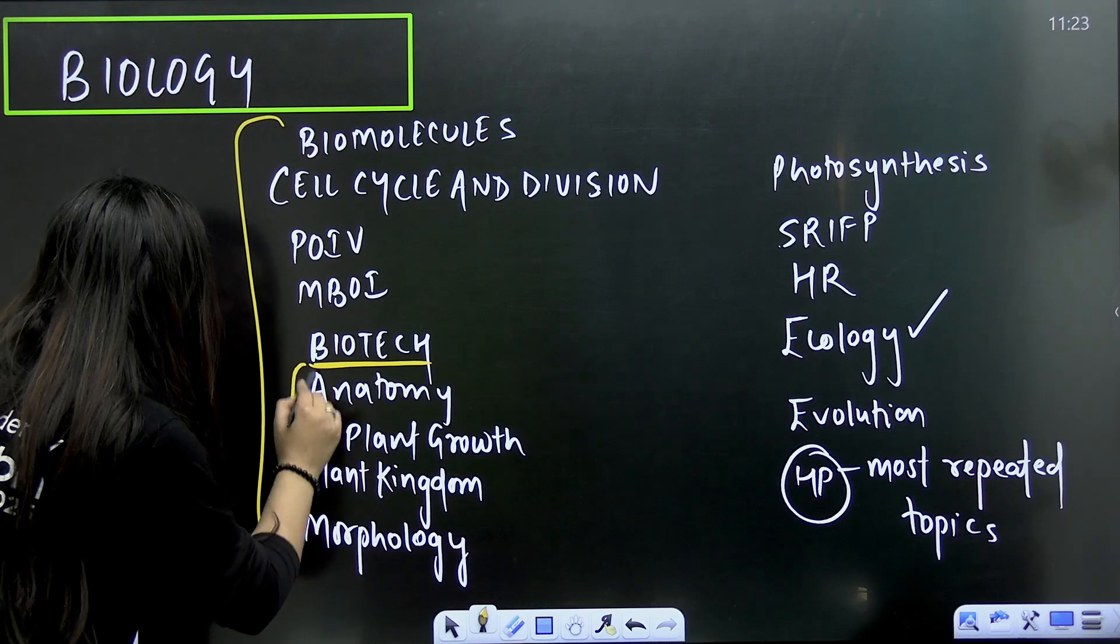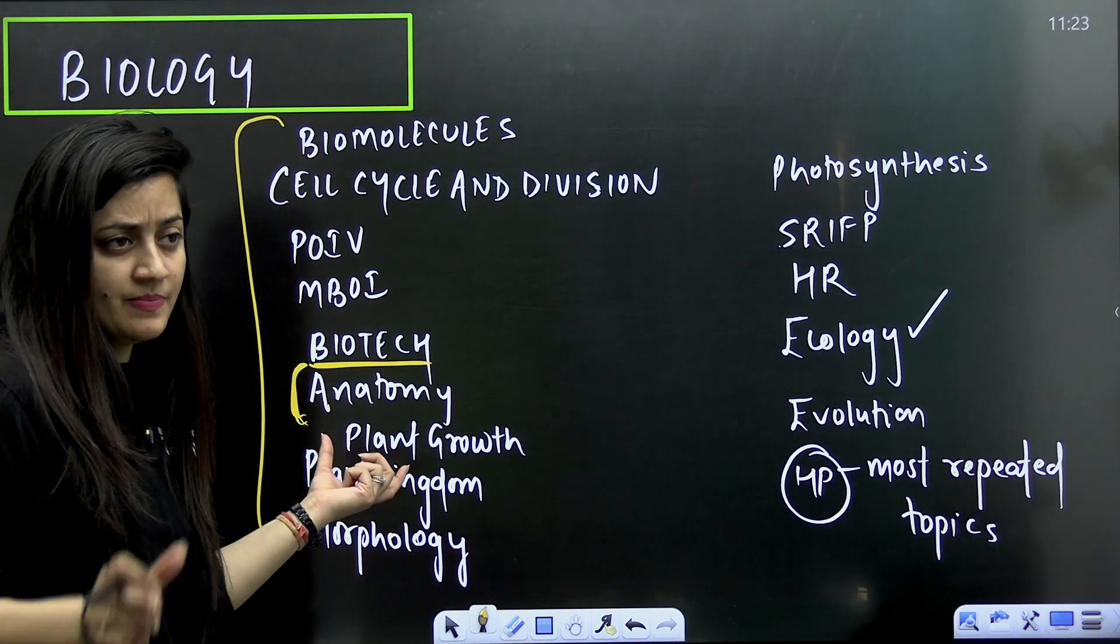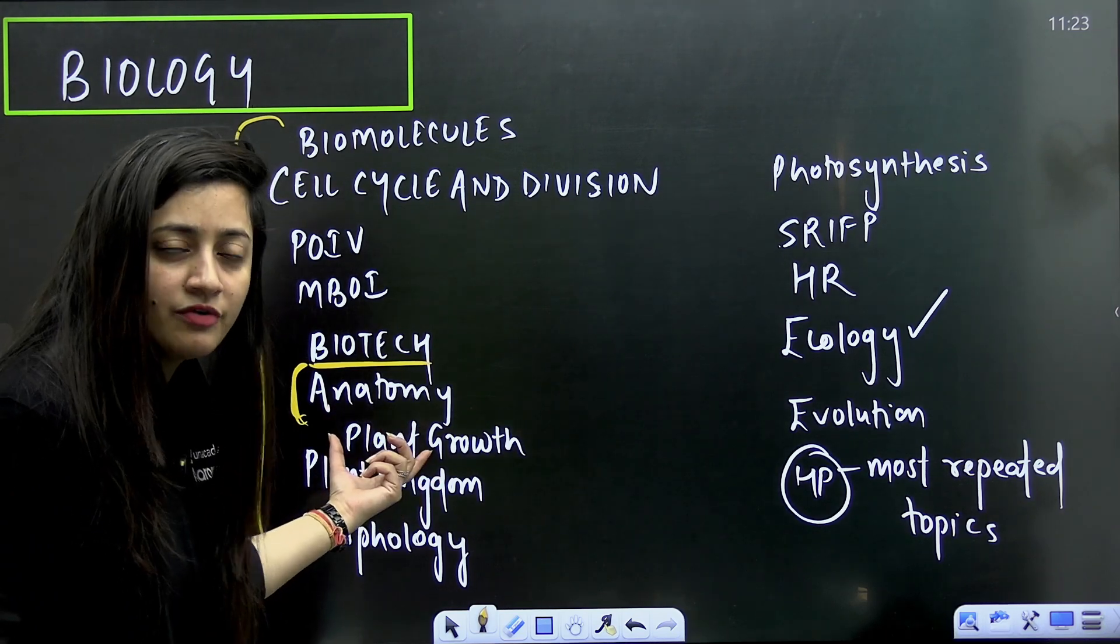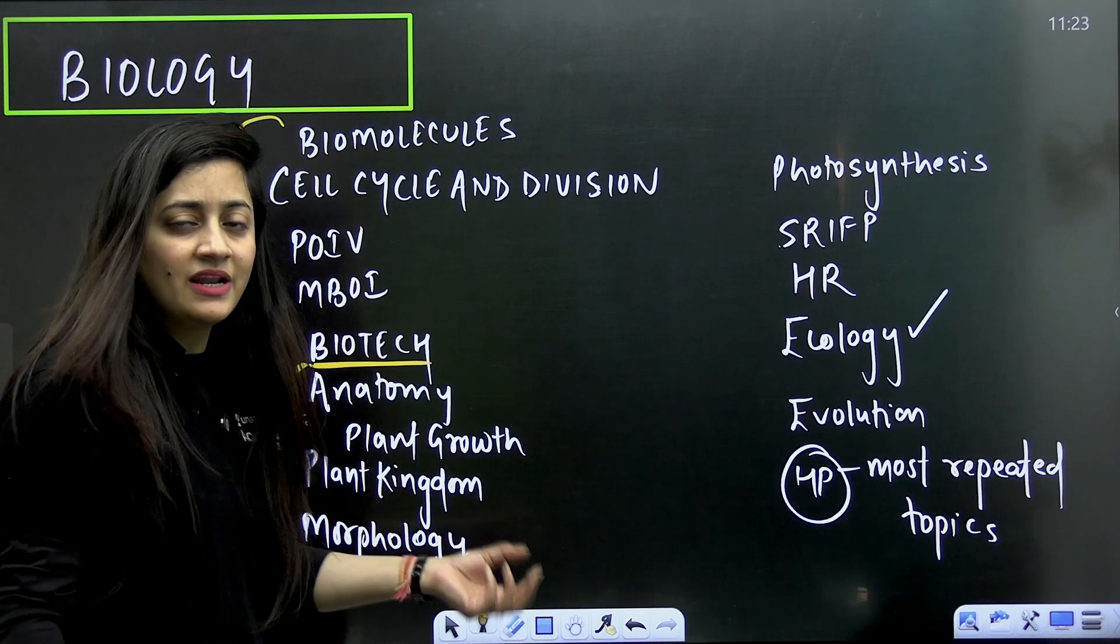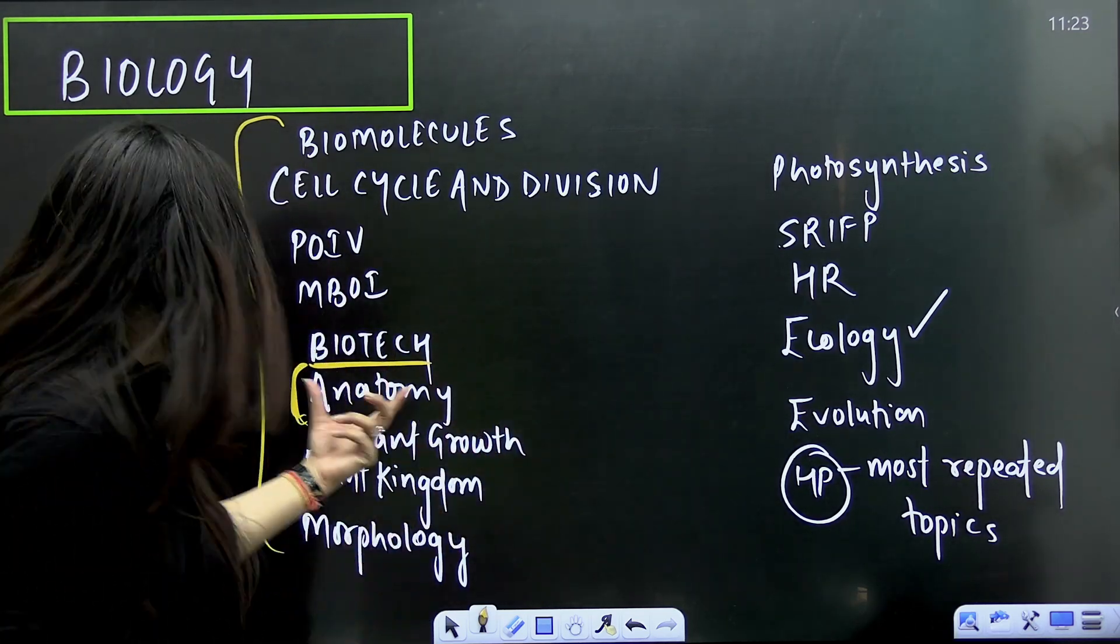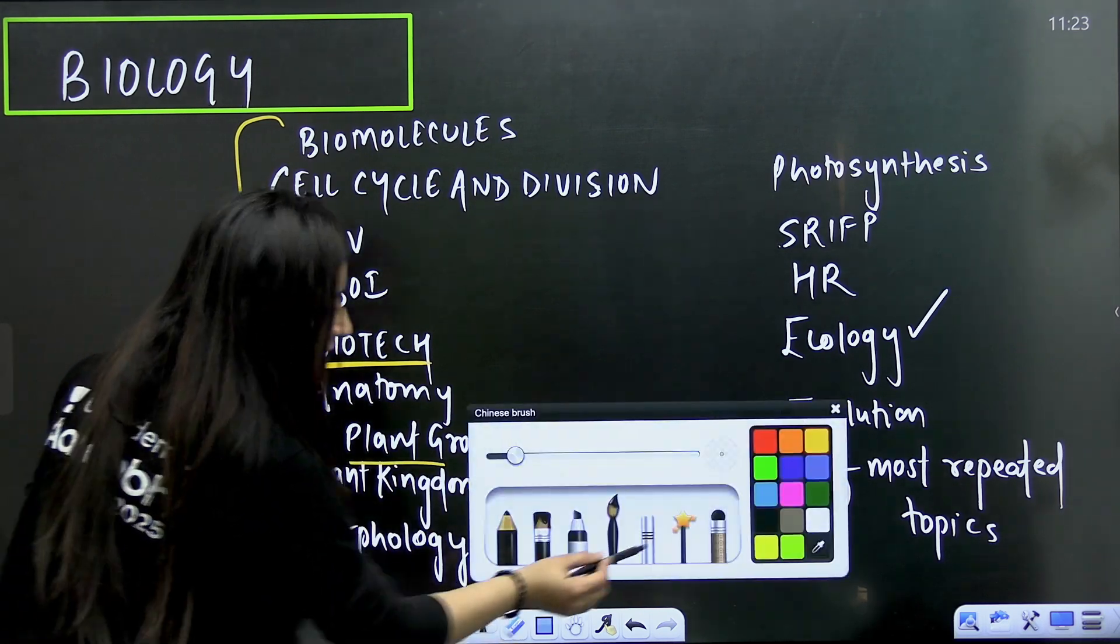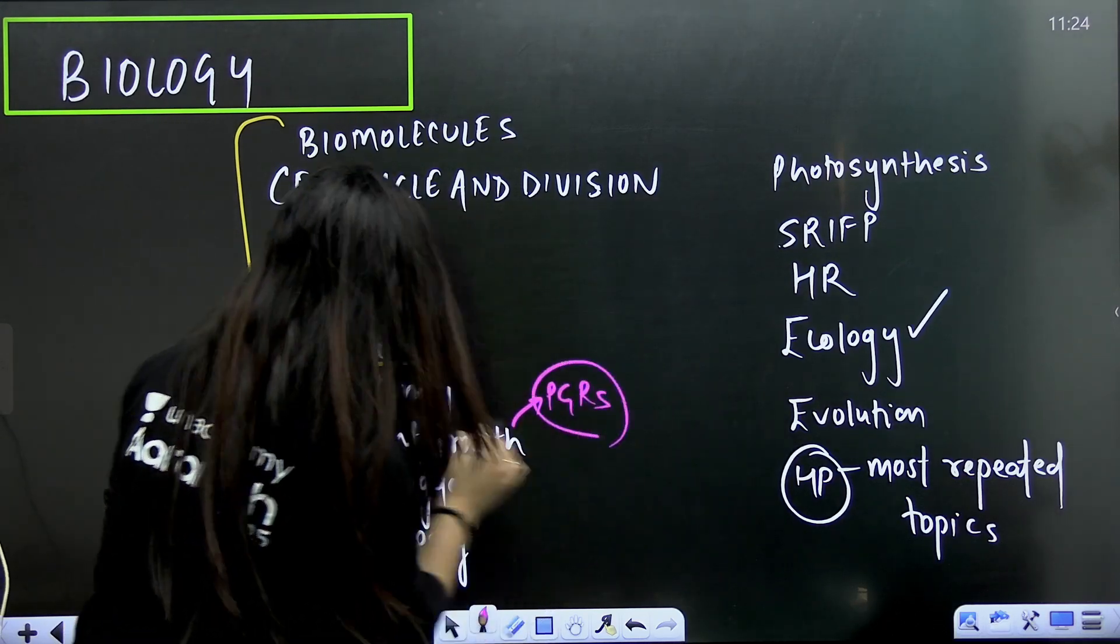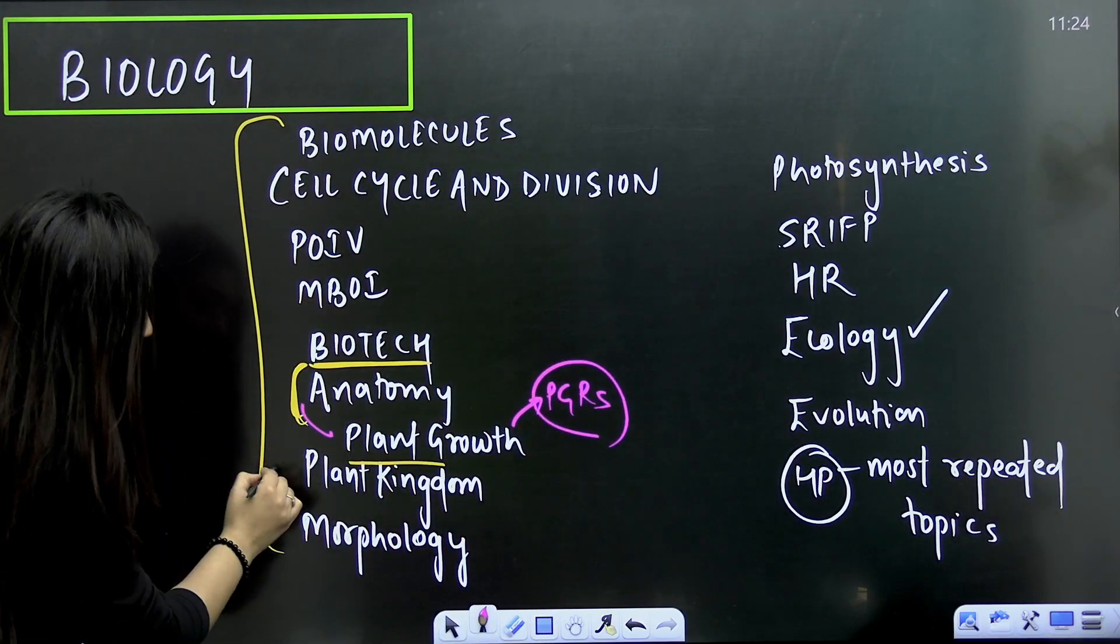Then anatomy. I believe from anatomy you need one hour to revise anatomy. I am going to put a short video for that particular chapter as well. You just need one hour. You need to focus on certain details and you will be done. Then plant growth and development. From this particular chapter, PGRs, very very very important. And anatomy and plant growth, they are related.